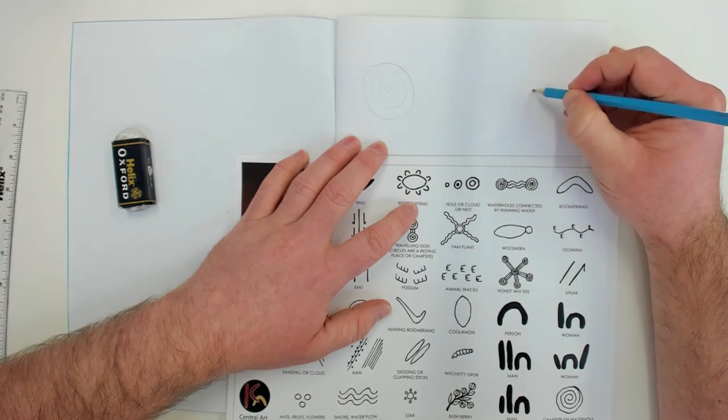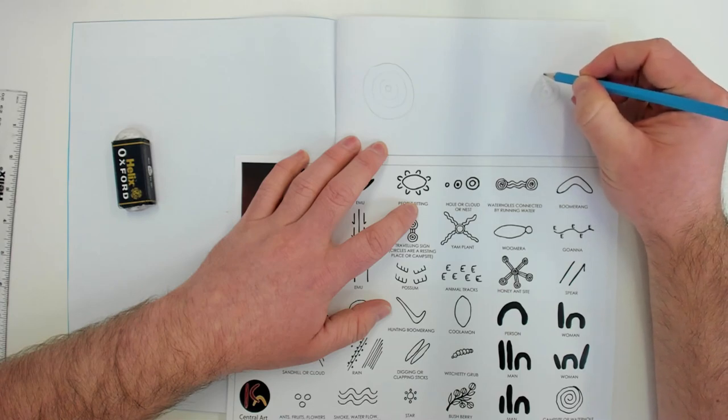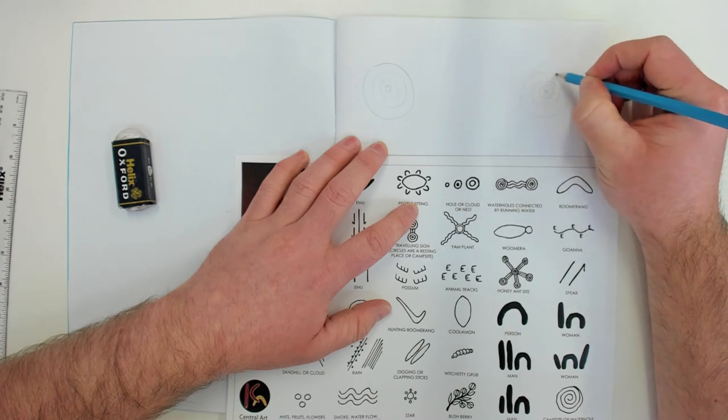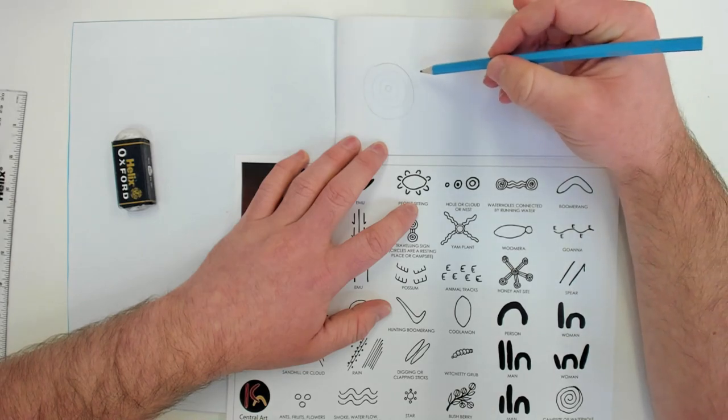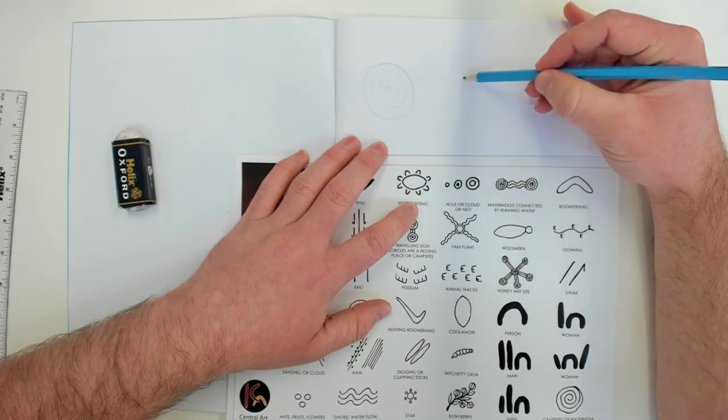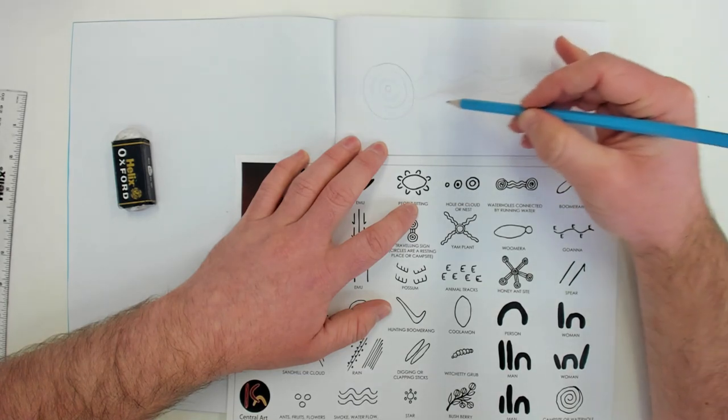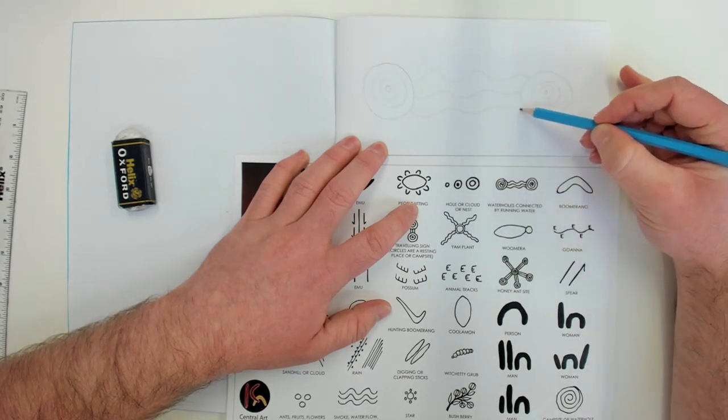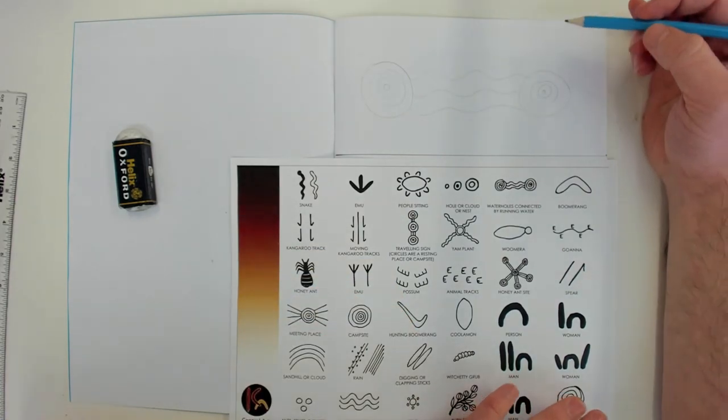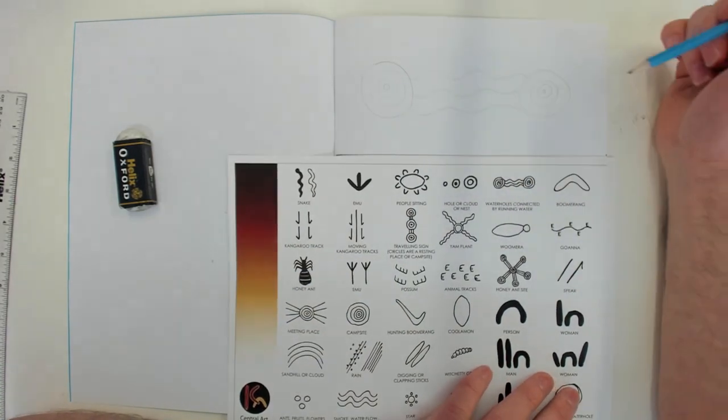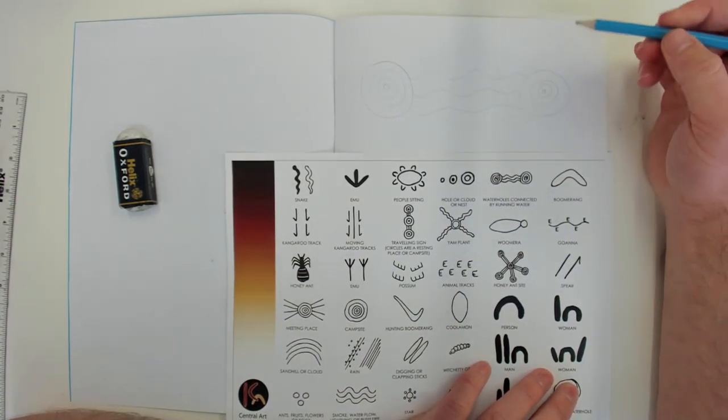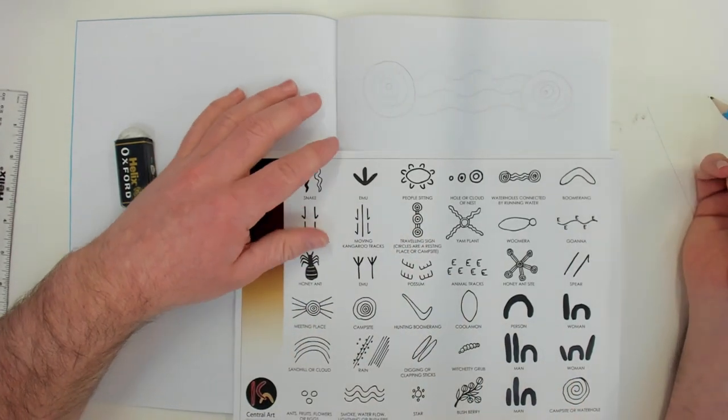And I have another waterhole over here. I'll do my dot in the middle. One, two, three rings. And then the water connecting them. So, that's the main focus of my story.